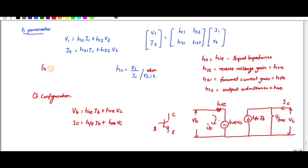H12 is equal to V1 by V2 when I1 is equal to 0. So what is V1 by V2? It is a reverse voltage gain. So I can write this as HRE, where R stands for reverse voltage gain and E stands for common emitter.